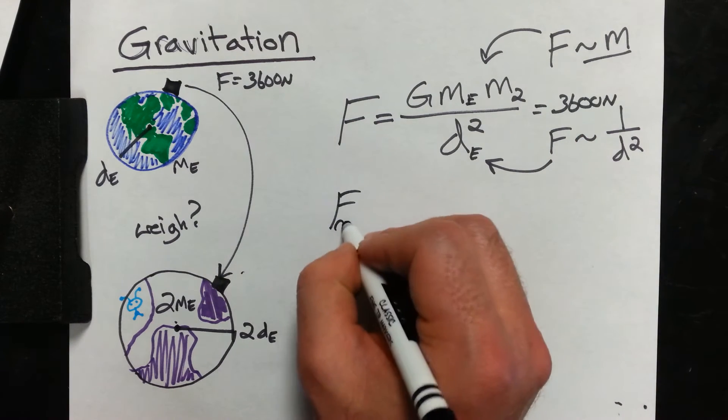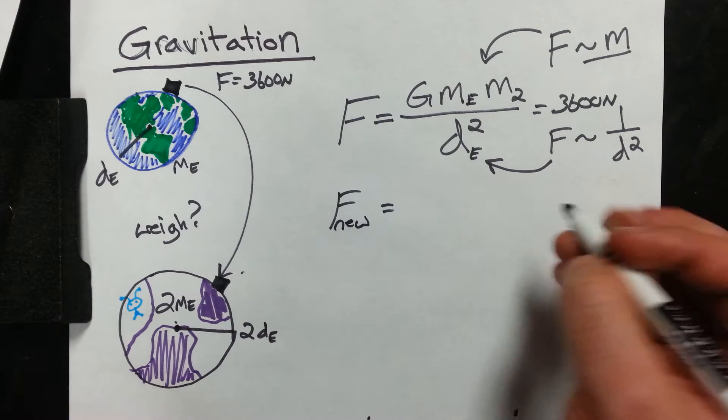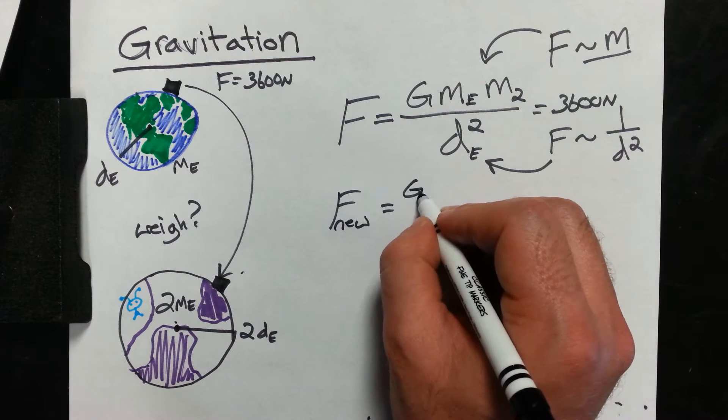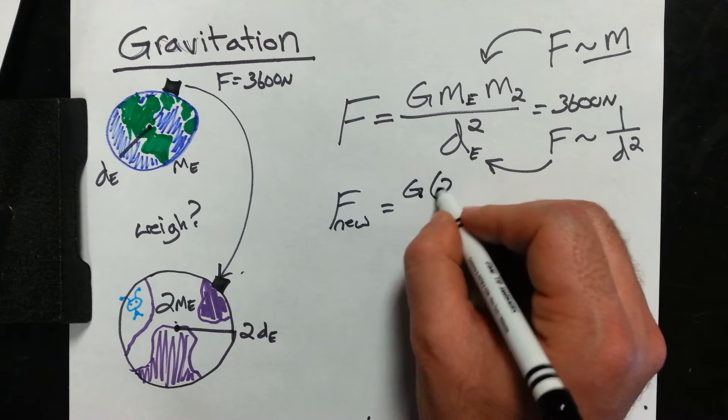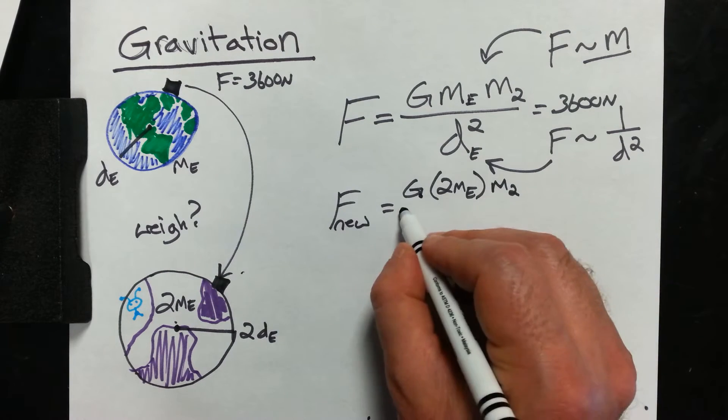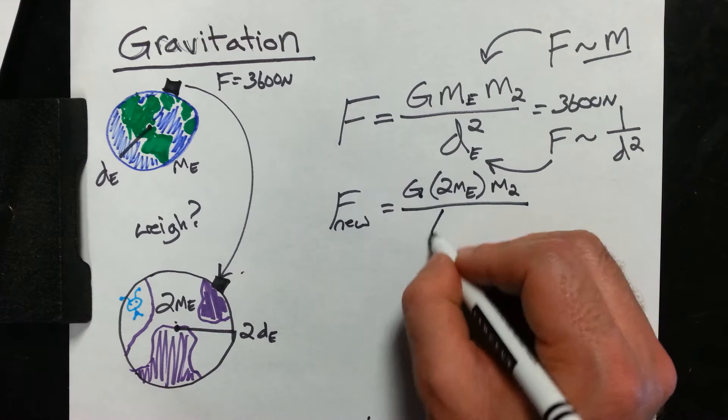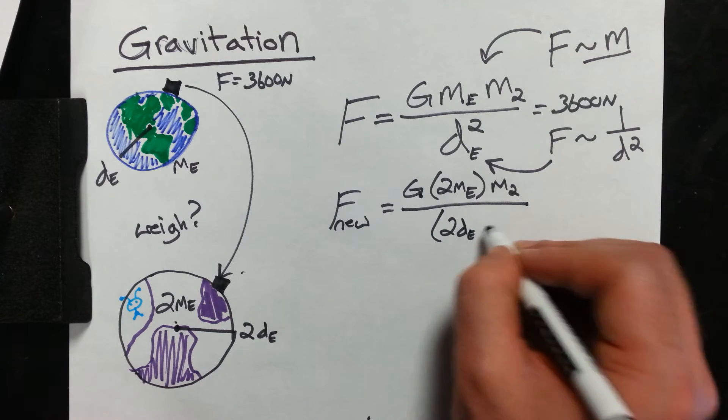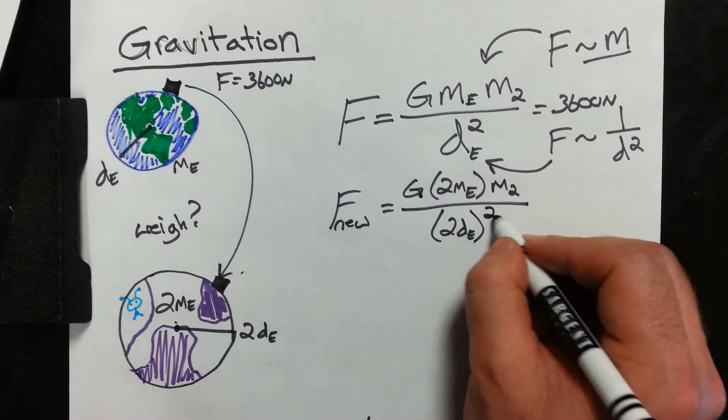So for our new planet, it would be a new weight, new force due to gravity. G doesn't change, the gravitational constant. But now it's twice the mass of the Earth. And the mass of the probe doesn't change, at least for our example it doesn't. And we have twice the distance to the center. And all of that is squared.